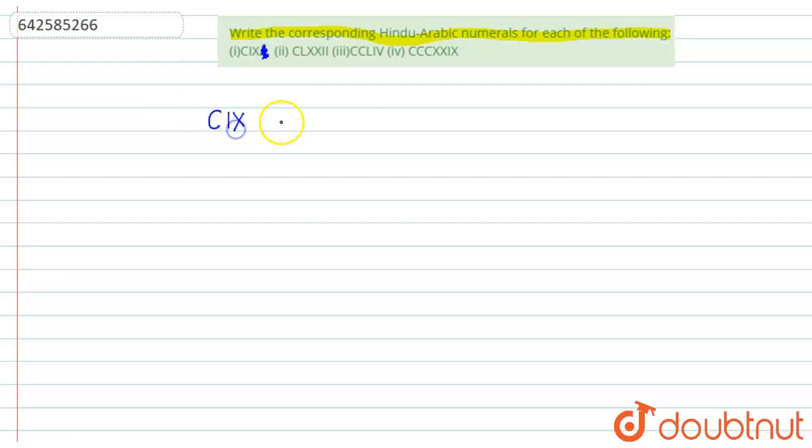C I X. So C is for hundred and this is a nine, so the number is one hundred and nine.